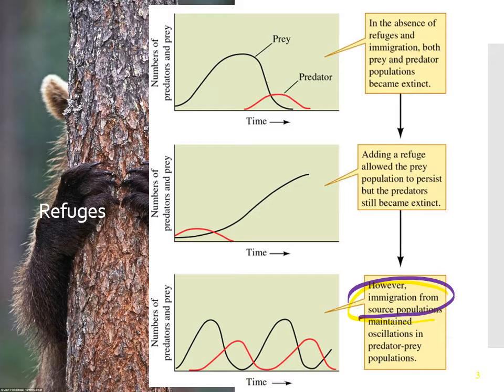In general, predators have very large home ranges as they go from place to place in order to find food. They are constantly moving from one spot to another.